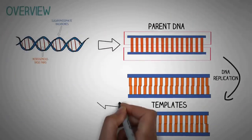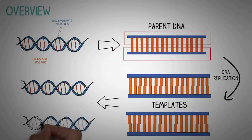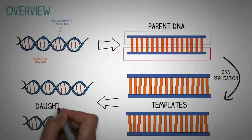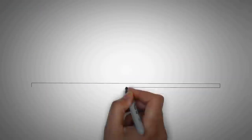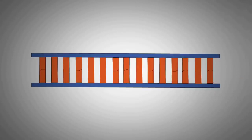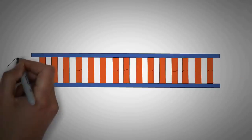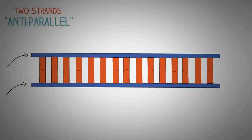When the parent DNA is split, each strand acts as a template for the formation of a new strand, leading to the formation of two completely new sets of DNA called the daughter DNA. Looking more closely at the stepladder model, the two strands are joined together at the center by hydrogen bonds, and these two strands run in completely opposite directions — they are anti-parallel.